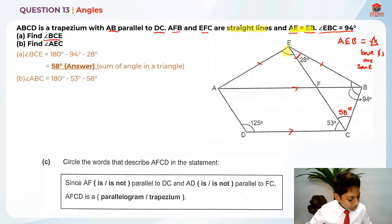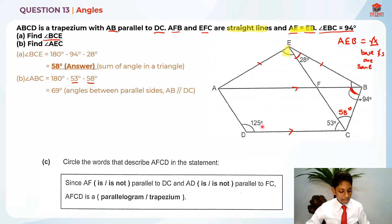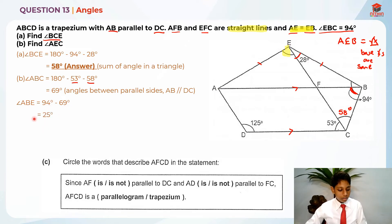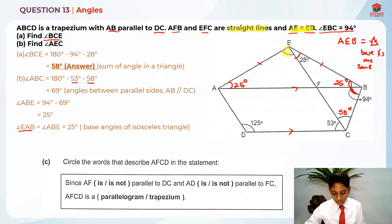So this is actually 58 degrees, and we can find angle ABC which is basically 180 degrees minus 53 degrees minus 58 degrees, which will give us 69 degrees — the angle between the parallel sides AB and DC, so these are interior angles. We already found this angle to be 69 degrees, so we can find the base angle ABE, which is 94 degrees minus 69 degrees. So angle ABE is 25 degrees. And since base angles of an isosceles triangle are equal, angle EAB is also 25 degrees.